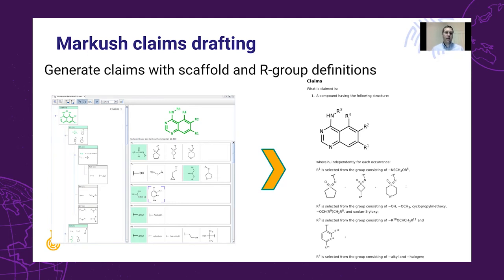Currently, English and Japanese claim generation are supported in the application. The created Word document is fully editable, and if you have a JChem for Office or JChem for Office Light extension, you are able to modify all of the chemical structures exported in the document.